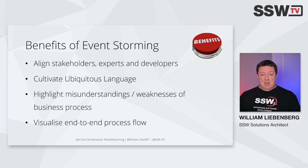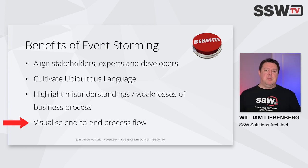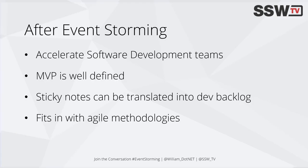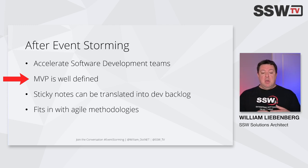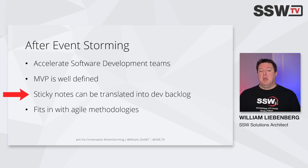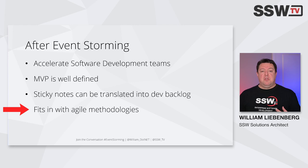As a great end deliverable, we have that visualized end-to-end flow, so you can actually see where the process starts, where it ends, and everything in between. After an event storming workshop, we can use that to accelerate our development team. Our MVP — minimum viable product — is very well defined. All the events and the process are fairly well described and we can translate that into backlog items. Event storming fits into any of the agile methodologies and doesn't have to be done only at the start of a project — it can be done in the middle or at the end.